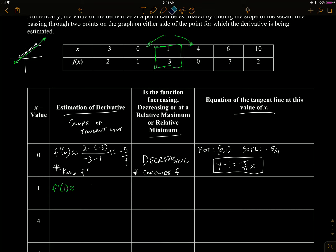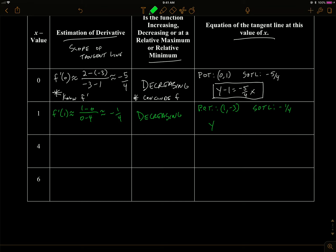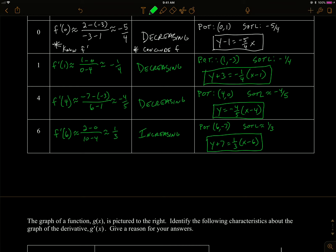Now at x equals one, I'll do the secant line using the two points on either side. The derivative at one is estimated by the slope: one minus zero over zero minus four, which gives negative one fourth. Because the derivative is negative, f of x is decreasing. The point of tangency is one, negative three, slope is negative one fourth, so the tangent line equation is y plus three equals negative one fourth times x minus one.